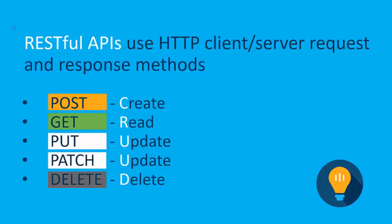RESTful APIs use HTTP client-server request and response methods. The typical methods for HTTP and REST are: POST when you're going to create content onto the web server; GET when you want to request information from the API or web server; PUT when you're sending data to the server; PATCH when you're updating information or making a small change; or DELETE when you're deleting a resource.